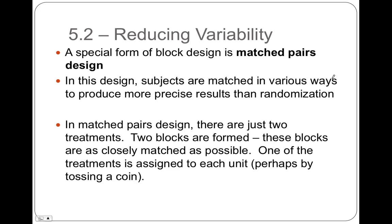There's a specialized form of blocking called matched pairs. In a matched pairs design, we match subjects in various ways to produce more precise results than randomization alone. There can only be two treatments, and we form two groups that are as closely matched as possible, with one treatment assigned to each unit — essentially creating many blocks of size two.